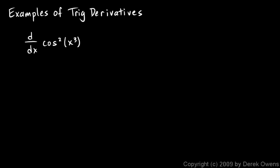Okay, here are some more examples of derivatives involving trig functions. This one is the derivative with respect to x of cosine squared x cubed. And that is the same thing as the cosine of x cubed squared.